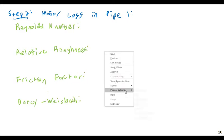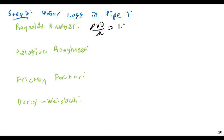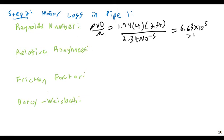So the Reynolds number is just rho vd over mu. And this is going to be 1.94 times 4 feet per second times 2 feet divided by 2.34 times 10 to the negative 5 for our viscosity. And this comes to 6.63 times 10 to the 5th. And this is greater than 4,000. So, therefore, turbulent.